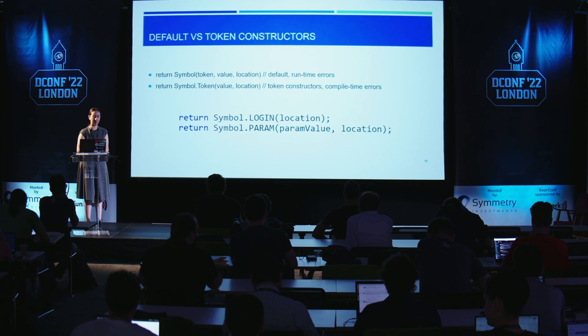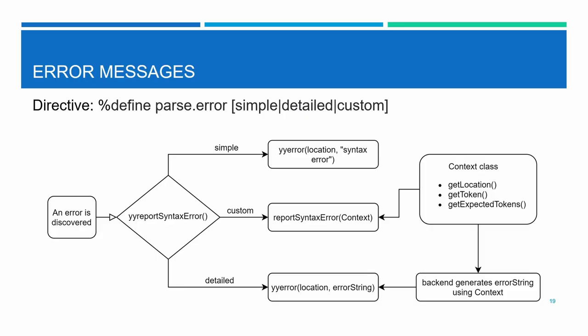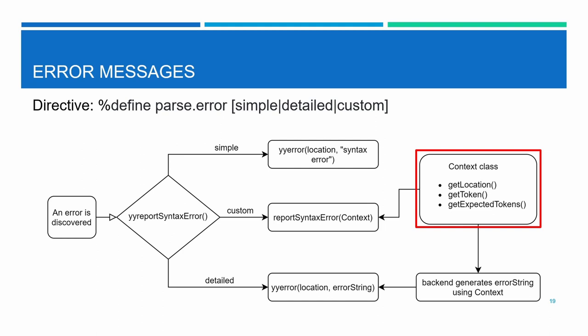Another thing I introduced was custom error messages. When I inherited the project, there were already workflows for simple error messages that just output the location and 'syntax error' — kept for backward compatibility reasons. For detailed error messages, Bison's backend creates an error string with the token that caused the error and the expected tokens. For custom error messages, I created a class that provides the user access to an API with the error location, the token that created it, and the expected tokens.